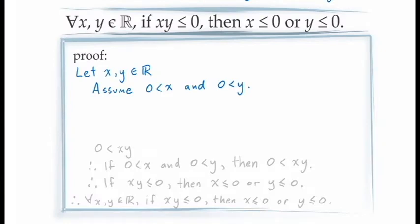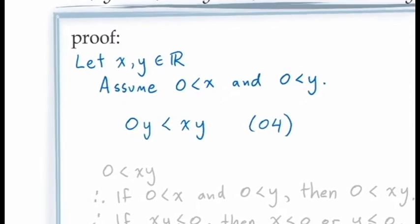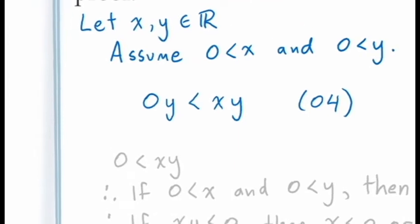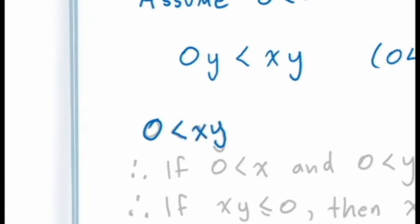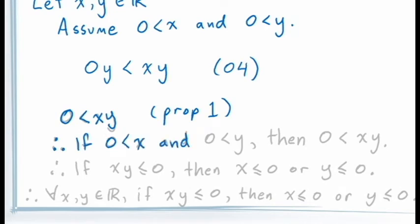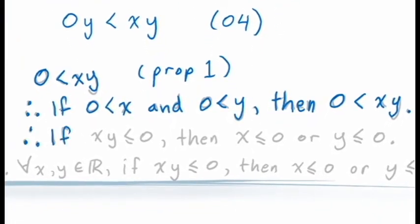Here we already have our assumption that 0 is less than X and 0 is less than Y. Applying axiom O4, we multiply both sides of the '0 is less than X' inequality by Y. This gives us 0 times Y is less than X times Y. Then applying Proposition 1, we reduce the '0 times Y' expression to just 0, and we get our result. From here, the principle of conditional proof allows us to make the conclusion: if 0 is less than X and 0 is less than Y, then 0 is less than XY. Expressing this statement in its contrapositive form gives us: if XY is less than or equal to 0, then either X is less than or equal to 0 or Y is less than or equal to 0, which is what we're trying to prove.